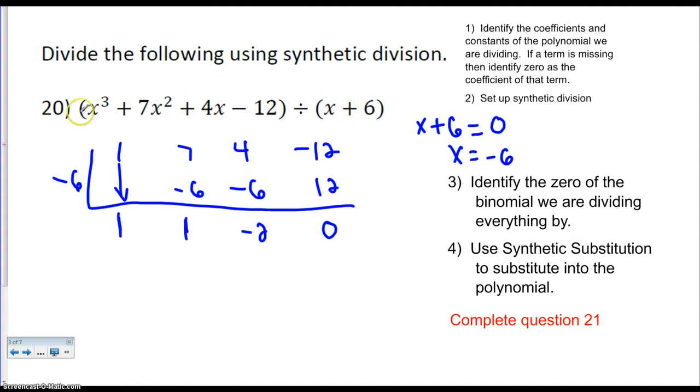So when I take x plus 6 and divide it into this polynomial, I get x. So this is all going down. This is your constant. That's your linear. This is your quadratic term. So I get x squared plus 1x minus 2. That's my quotient when I divide these two terms.